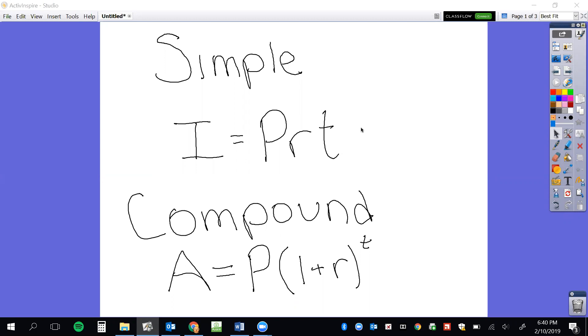Then if you look underneath it, we have a little bit more complicated formula for compound interest. A is your dollar amount including what you started with and including interest already added together. Where simple interest, it's just the amount of money that you've made. Compound already has it all put together.